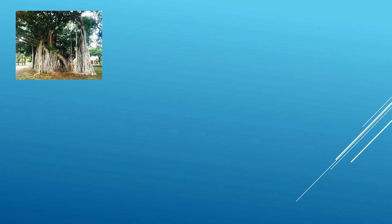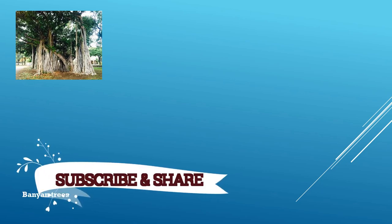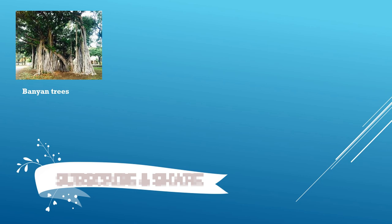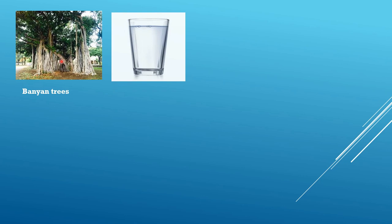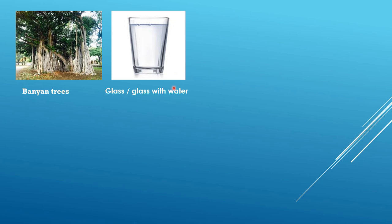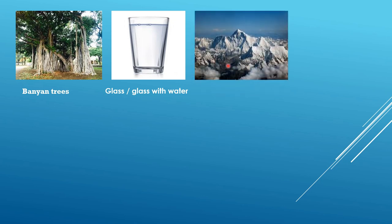This is a picture of a tree — the name is banyan tree. There are more than one tree here, one, two, and three, so you can say banyan trees. The next one is a glass — you can say 'glass with water' or 'glass in the water.'